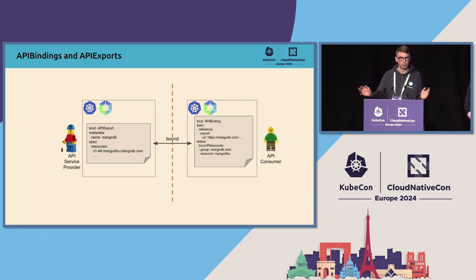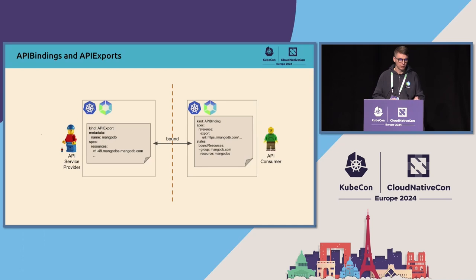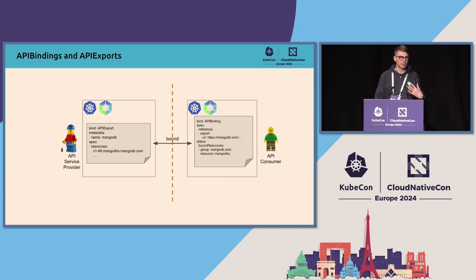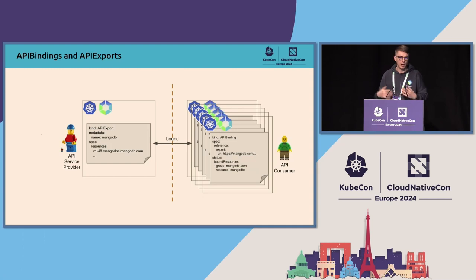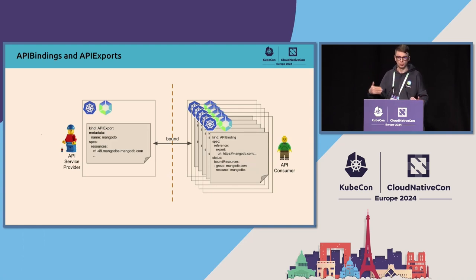But when the platform scales to the point of hundreds of thousands of users, you get to the point where you need a third persona: a service provider. Your platform team deals with the platforms. Your service provider team deals with MongoDB as a service. So your service team defines an API — MongoDB — and they define it as an API export, providing it as an API as a service within KCP. Consumers just bind to these APIs. You end up with a one-to-many relationship where multiple consumers can consume a certain API version. Your MongoDB service team is only versioning their APIs on their own, and they can provide multiple versions of CRDs to the different logical clusters. By default, you get this built-in API as a service inside KCP.